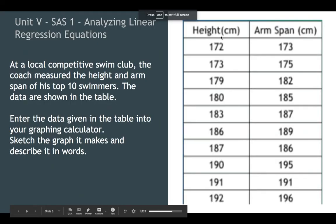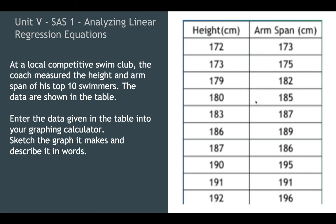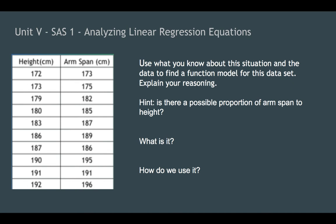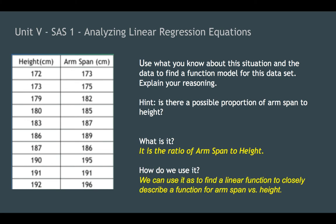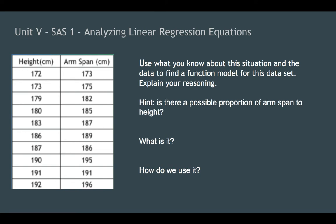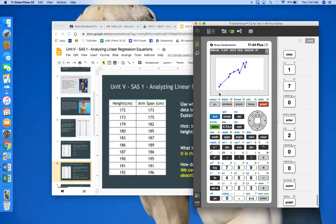But we can see that there's a definite correlation between the height and the arm span. Arm span is bigger than the height almost in every situation. One inch here, two inches here, three inches, five inches, four inches, three inches. This one's less. Five, the same, four inches. So you get an idea that in that swim club, nine out of ten of the best swimmers have longer arm spans than they do height.